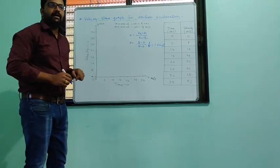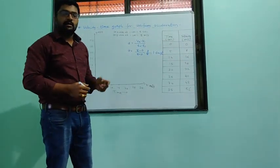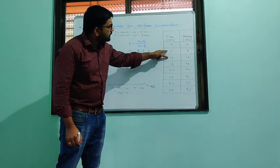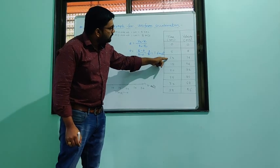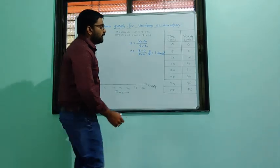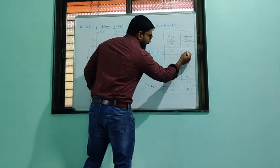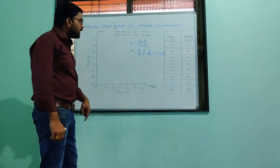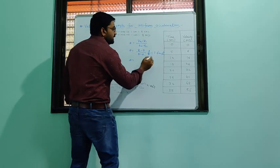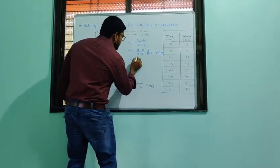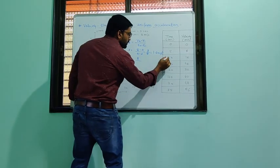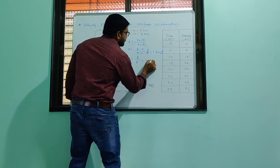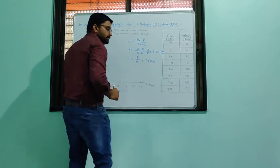That is the value of acceleration up to 5 seconds. For the second interval, 5 to 10 seconds, velocity changes from 8 m/s to 16 m/s. Acceleration = (16 − 8) / (10 − 5) = 8/5 = 1.6 m/s².